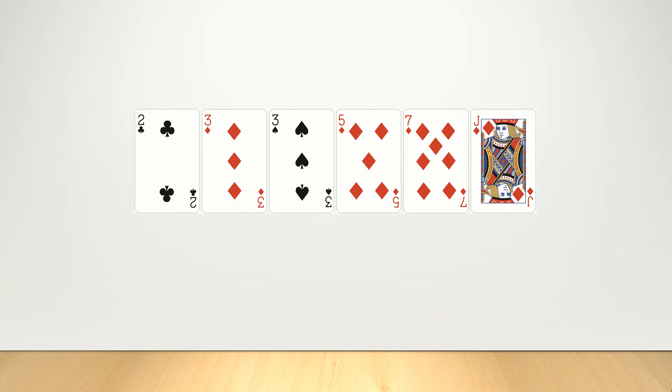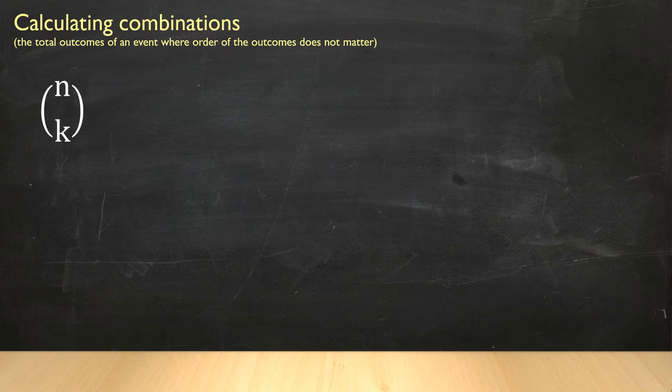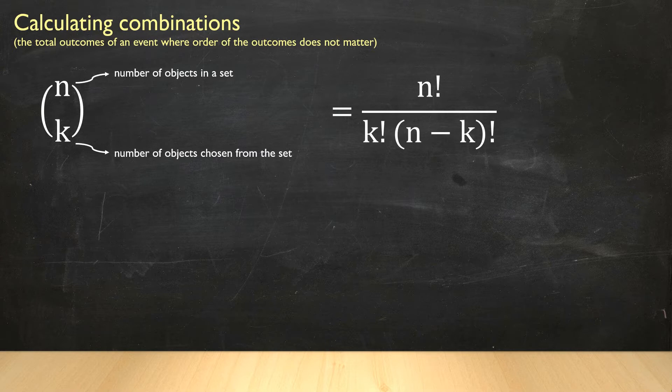To talk about flushes, we need to do some math. So we're going back to math class. The way we calculate how many different cribbage hands there are is by using a combination formula, and it looks something like this. N choose K. N is the number of objects in our set, and K represents the number of objects we're choosing from that set. The formula is N factorial divided by K factorial multiplied by N minus K factorial. If you remember back to math class, factorial is a mathematical operation that says to multiply all whole numbers from our chosen number down to one. So four factorial, as an example, means four times three times two times one. That equals 24.